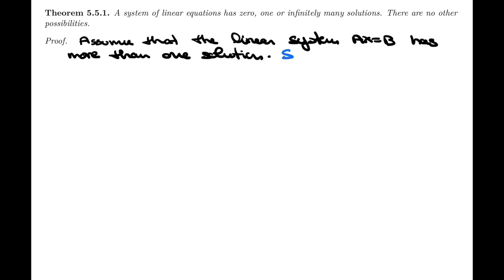And what we want to prove, and so this is the part where we state exactly what we want to show, which is that we want to show that it has infinitely many solutions. So if it has more than one, then it has infinitely many solutions. That's the goal of our proof.